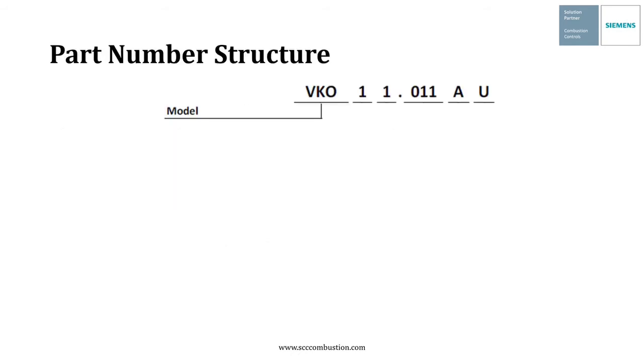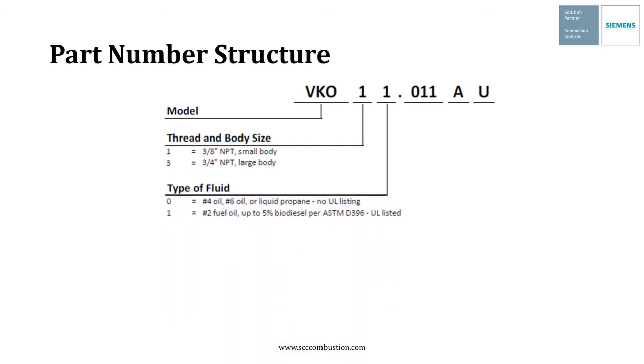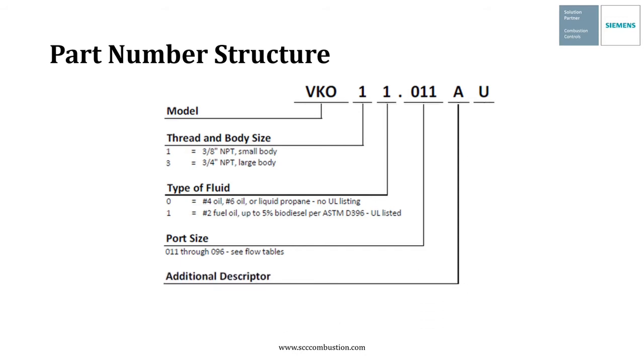The part number structure is similar to most other Siemens and SCC products. The first three characters VKO simply represent the model. The next character will be a 1 or a 3 differentiating the small body from the large body. The next character is a 0 or a 1 for the type of fluid that the valve is designed for and approved to be used with. The next three characters represent the port size. There are currently 11 different port sizes across the two bodies. The next character is an additional descriptor to allow some variety as the product line expands. And finally a U or an N represents whether it's UL listed or not. Note that not every combination is an actual product that can be delivered, so pay attention to the literature for details.